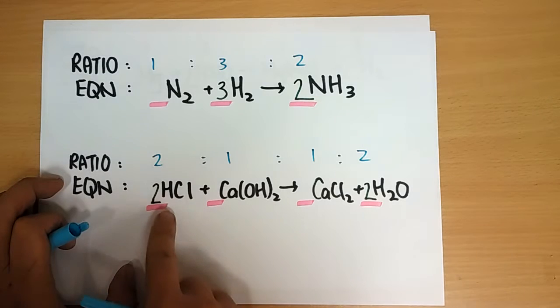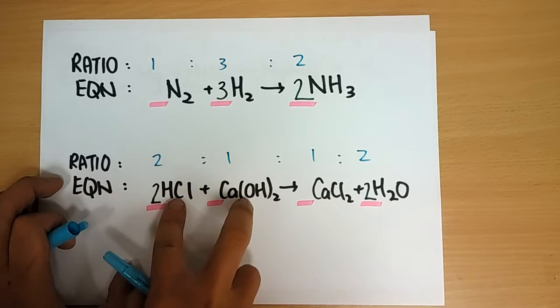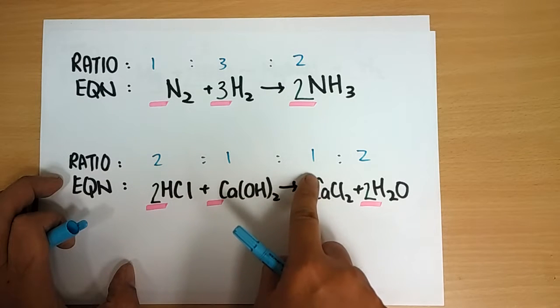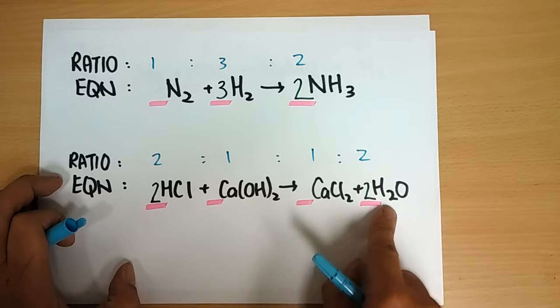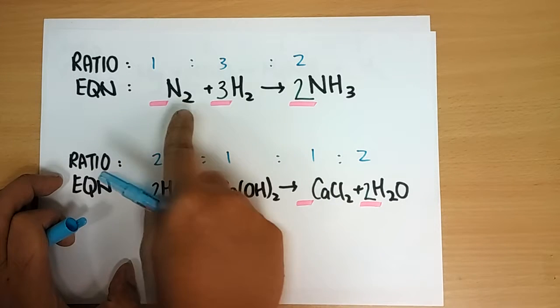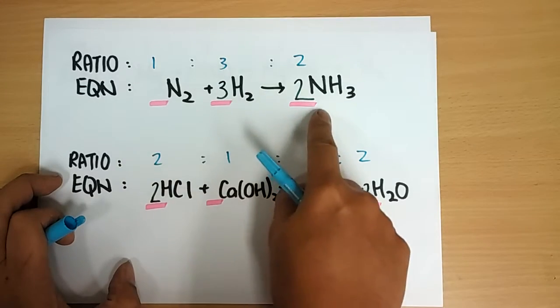The mole ratio tells us the amount of moles required for reactants to react, and this will produce products in the given ratio. 2 moles HCl and 1 mole Ca(OH)2 produce 1 mole CaCl2 and 2 moles H2O. Similarly, 1 and 3 will react to produce 2 moles of this.